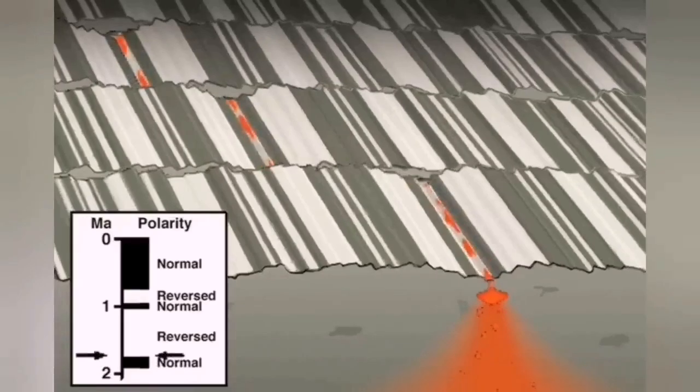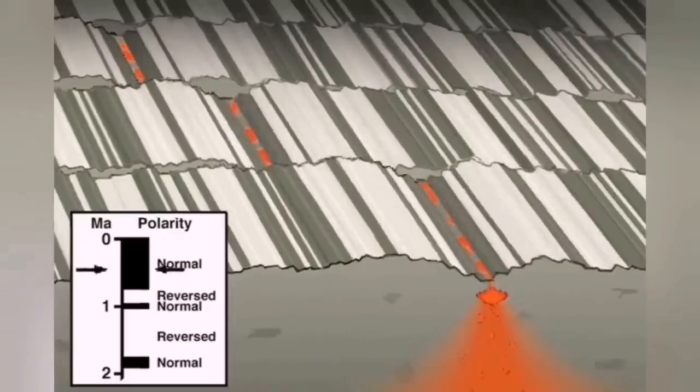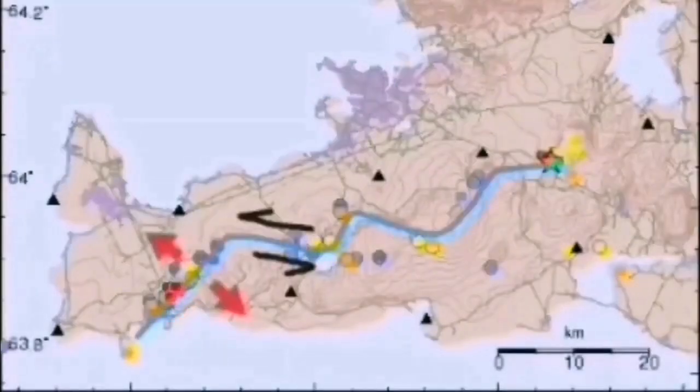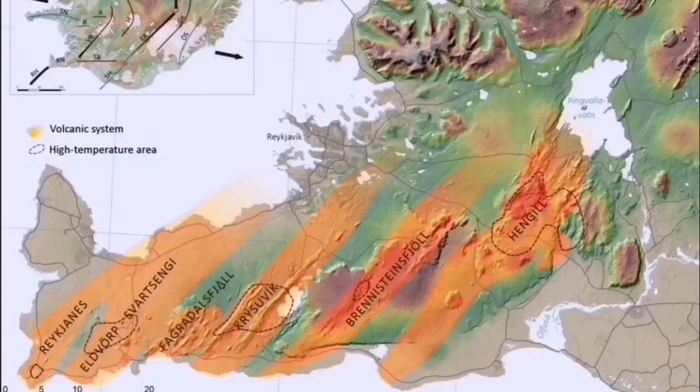That is transform faults. Transform faults are actually the reason that we have the oceanic ridges. And in this area, we see them clearly. These are the progenitors to what we see as the volcanic systems, different volcanic systems in the Reykjanes Peninsula.